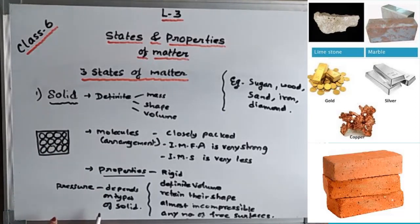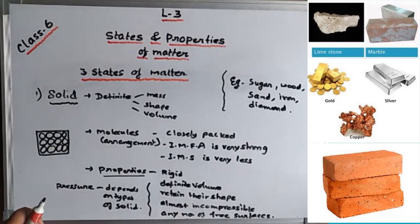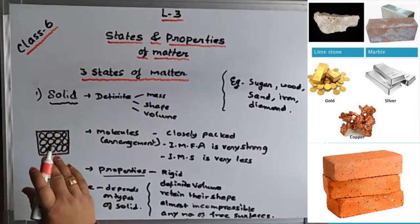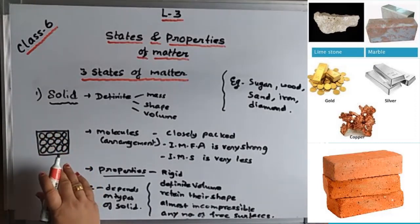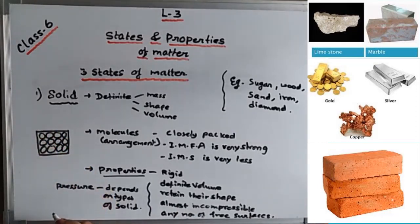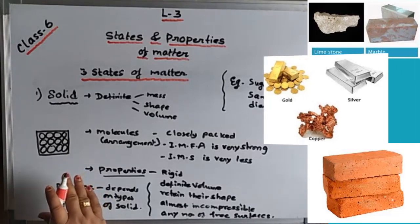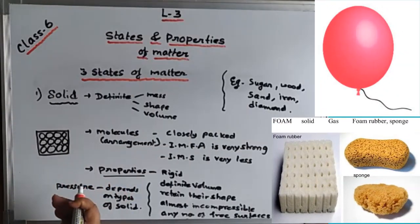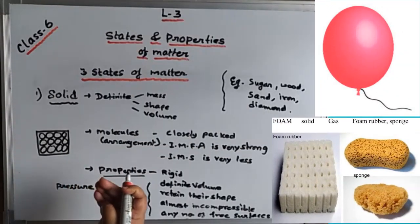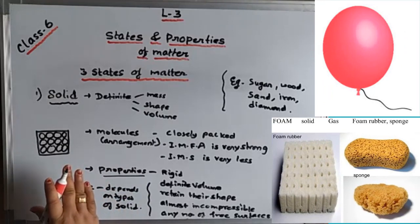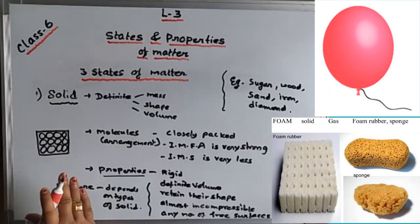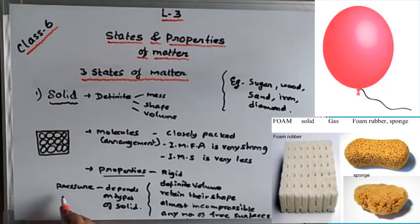The last point is about pressure. Most hard solids are incompressible when pressure is applied. But when pressure is applied to soft solids like sponge, rubber bands, and balloons, they can be slightly compressed. So the pressure response depends upon the type of solid you are taking.